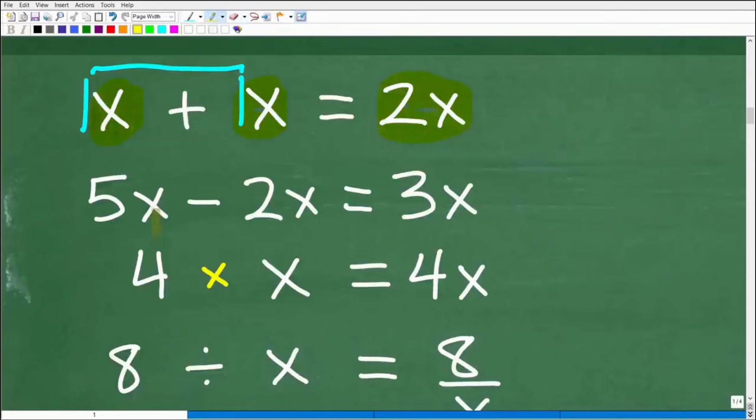So X+X is 2X. How about 5X-2X? Well, if I have 5 X's here and I take away 2 X's here, I'm left with 3 X's. So you can see, the language of algebra is not that difficult.